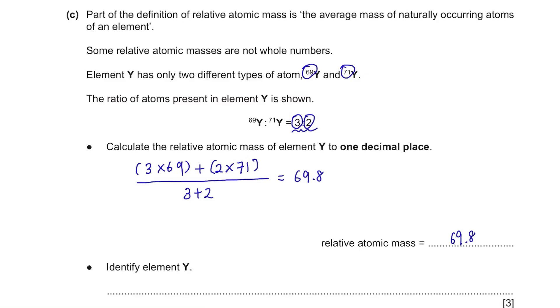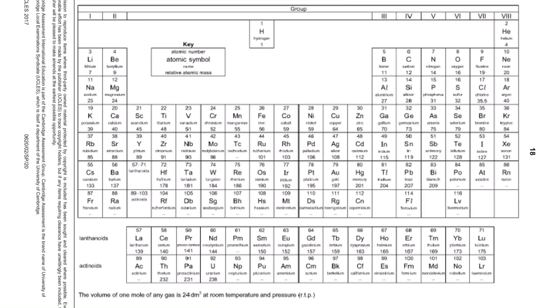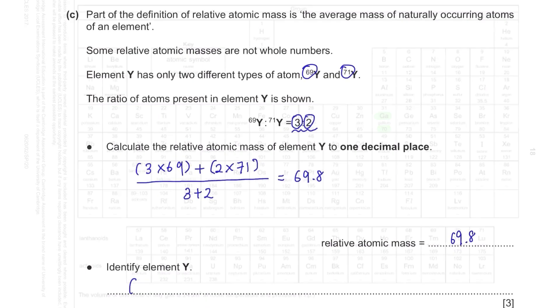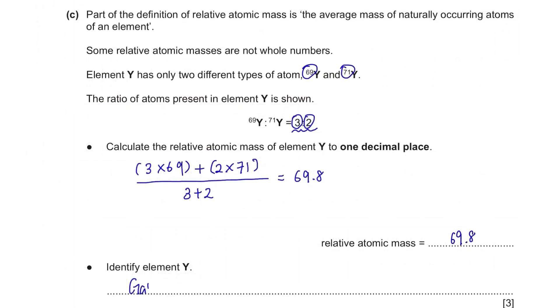Identify element Y. Looking at the periodic table, we can see that gallium has an atomic mass of 70, very close to 69.8. So the answer is gallium.